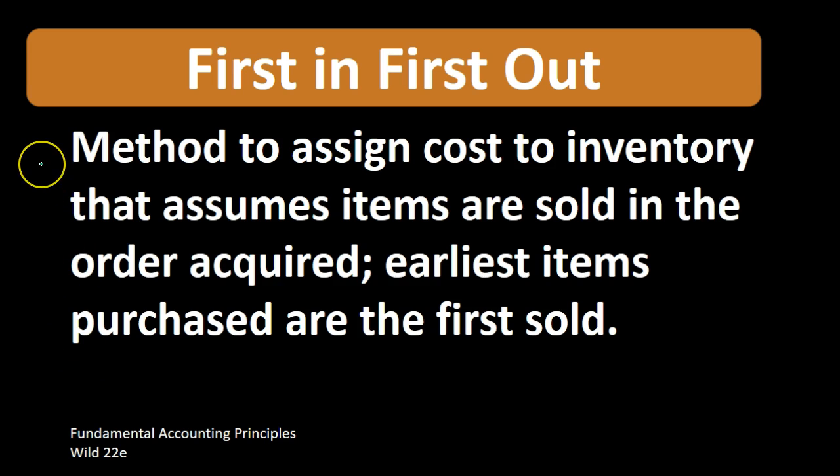So we're talking about an inventory cost flow assumption method — meaning we're not doing specific identification, we're not specifically identifying the cost of the specific inventory sold. The assumption is that the items we purchase first are the first ones that we sell. That assumption does not mean that the physical flow happens that way all the time, although FIFO is probably closer to what most would imagine we'd want the inventory flow to be.